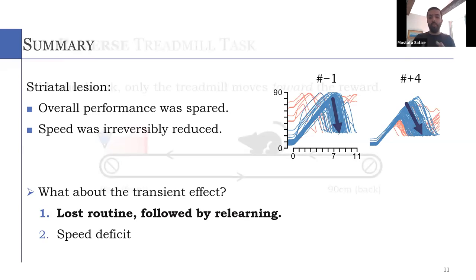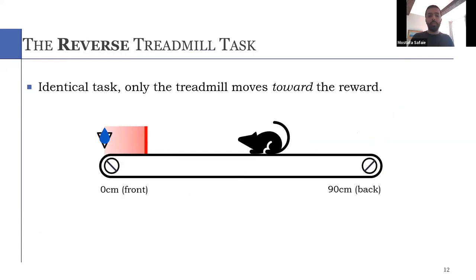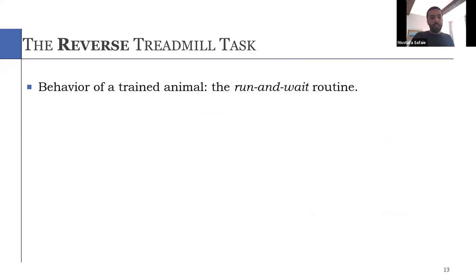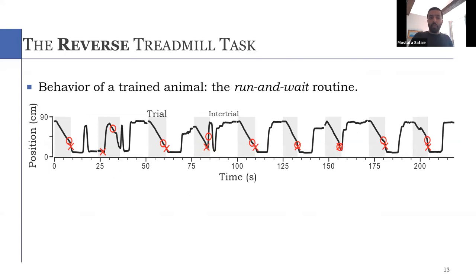Identical to the original task, the only difference is that the treadmill moves toward the reward instead of away from it. So what this means is that all the animal needs to do is just to go to the back of the treadmill and sit while the treadmill transports it to the reward. So it could be performed basically with a very compromised motor system as well. And that's the behavior that we see animals develop.